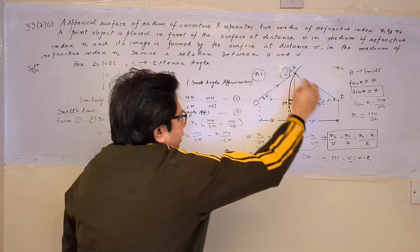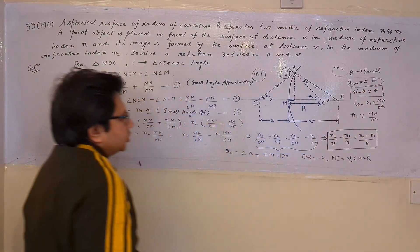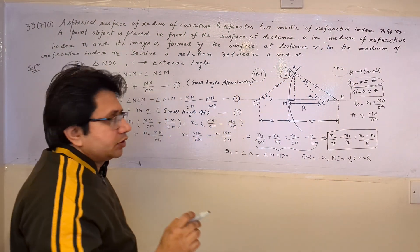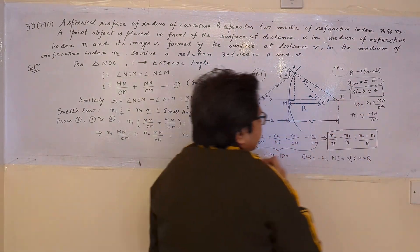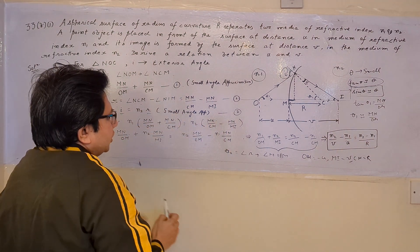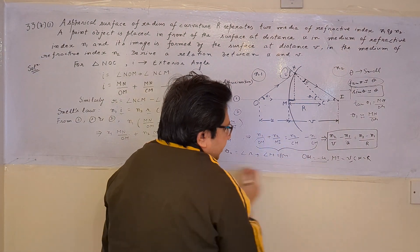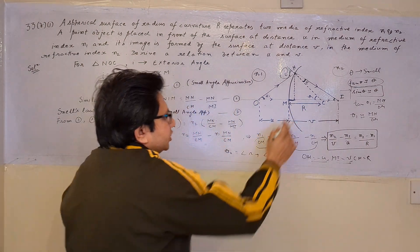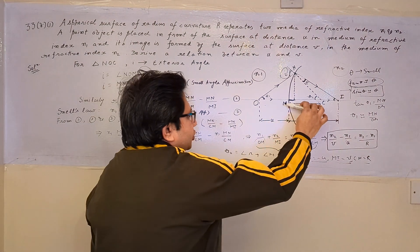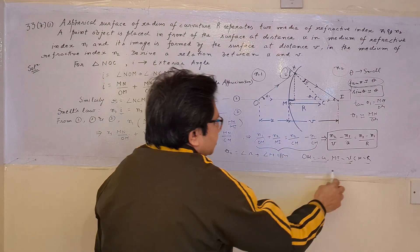We put NM upon MI by using the small angle approximation in place of angle NIM. Then we wrote Snell's law: n1 times I equals n2 times R, using the small angle approximation that sin theta is nearly equal to theta. After substituting the respective values of I and R into equation 3, we cancelled the common factor MN from both sides. Next we substituted OM as minus u, MI as v, and CM as R, using the sign convention in ray optics: if the object or image is on the left-hand side, we use a negative sign, and if on the right-hand side, a positive sign.